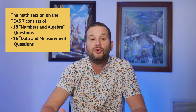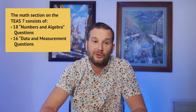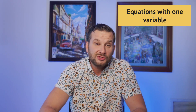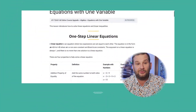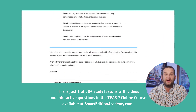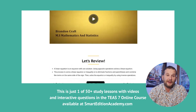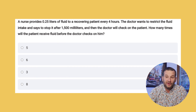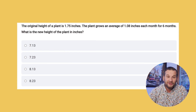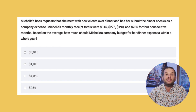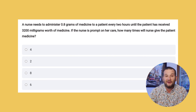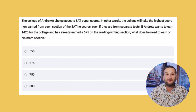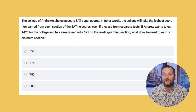Algebra is roughly half of the test — a notable change with the newer TEAS 7. The first algebra topic is equations with one variable: one-step, two-step, and multi-step linear equations. A big area is solving real-world word problems — you need to turn them into equations, pull out the relevant numbers, and not get tricked by irrelevant information that the test intentionally includes. Make sure you're answering the exact question being asked.